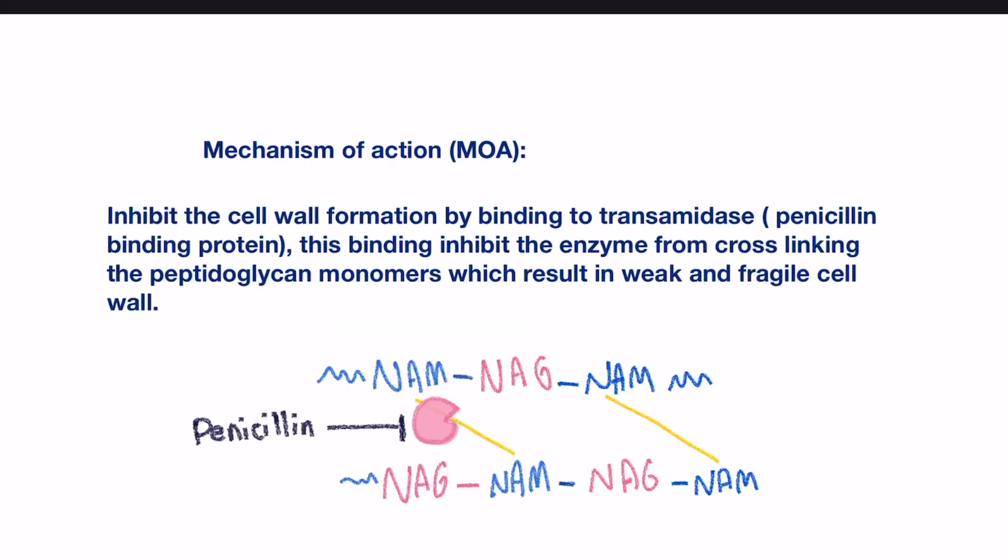So how really penicillin works? They inhibit the cell wall formation by binding to transamidase, which is the enzyme that is responsible for cross-linking reaction in the cell wall. Also known as penicillin binding protein, or transpeptidase in some books. These bindings of the penicillin and the enzyme inhibit the enzyme from performing its regular function, so from cross-linking the peptidoglycan monomers, which results in weak and fragile cell wall.